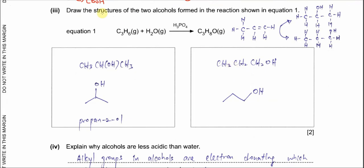Part 3: draw the structures of the two alcohols formed in equation 1. Propene reacts with steam and H₃PO₄ as catalyst in a hydration reaction — addition of H₂O across the C=C double bond. This can form two products: propan-2-ol or propan-1-ol, depending on which carbon the OH group adds to.